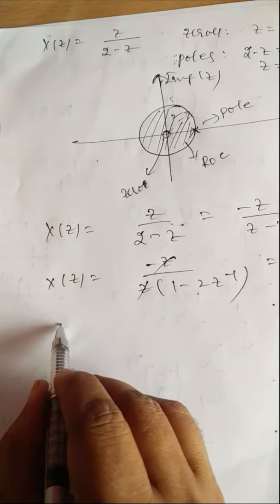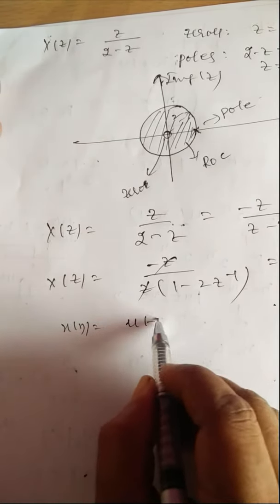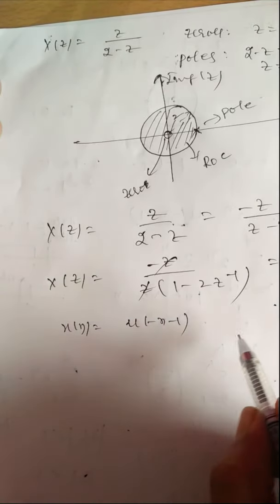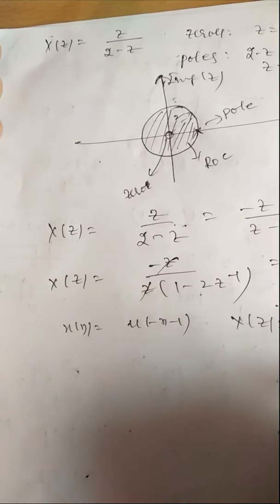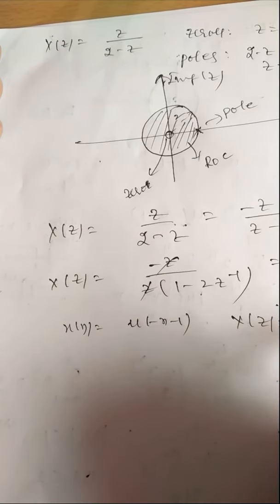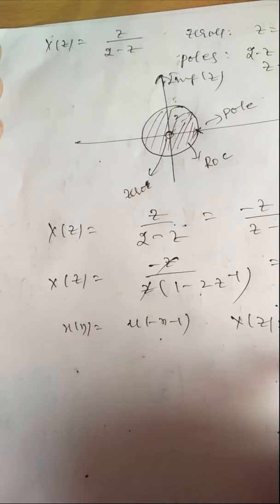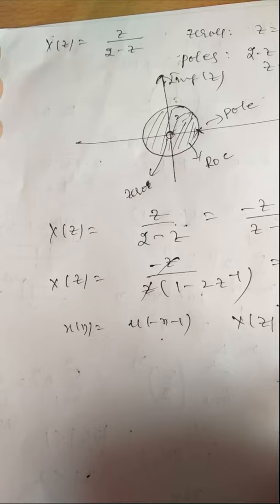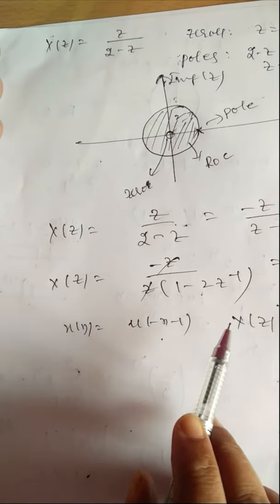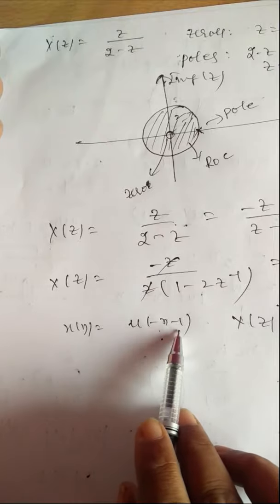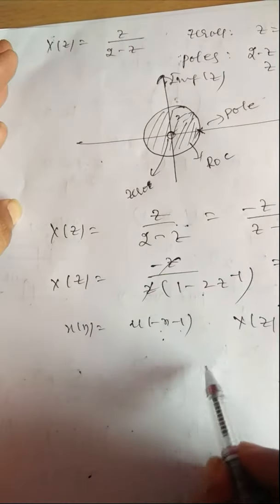If X(n) = u(-n-1), its Z-transform gives X(z) = -1/(1 - Z^(-1)), with ROC |Z| < 1 (inside the unit circle). When writing inverse Z-transforms in these cases, you should be very careful to write u(-n-1) for the left-sided signal, and understand the ROC is inside the circle.